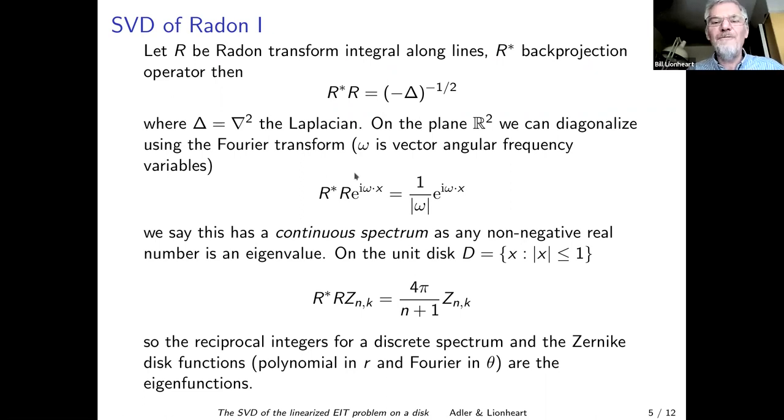On the whole plane, if you put in an e to the i omega dot x, where omega is a wave vector, what comes out is the same e to the i omega x, just divided by one over the length of frequency. These act as eigenfunctions and these act as eigenvalues. But anything can be an eigenvalue as long as it's not negative. So all positive numbers are eigenvalues.